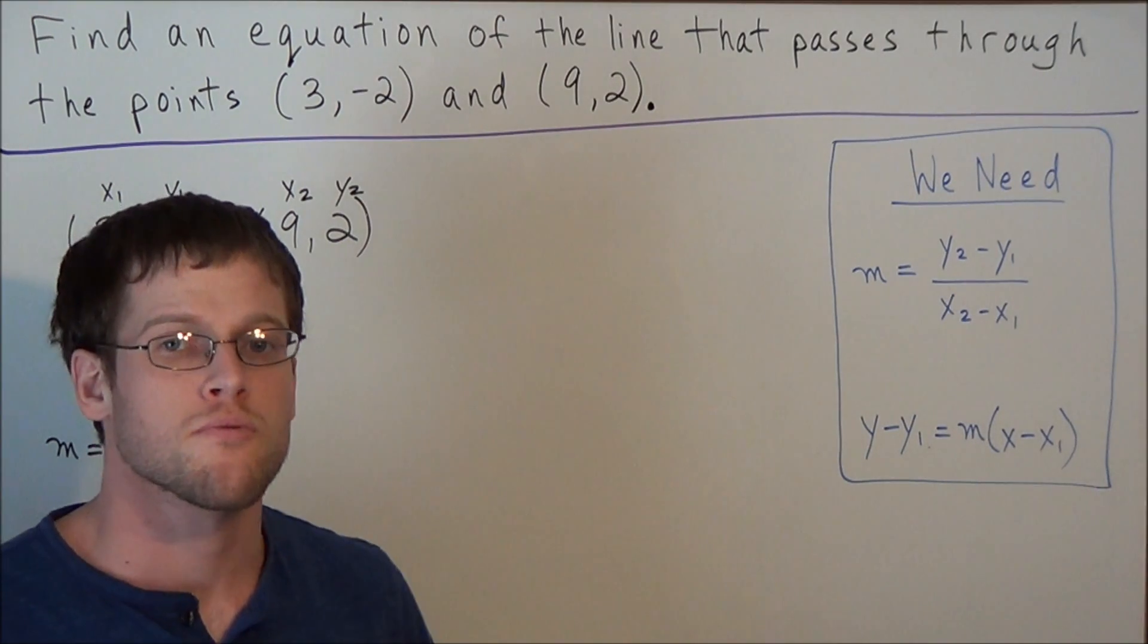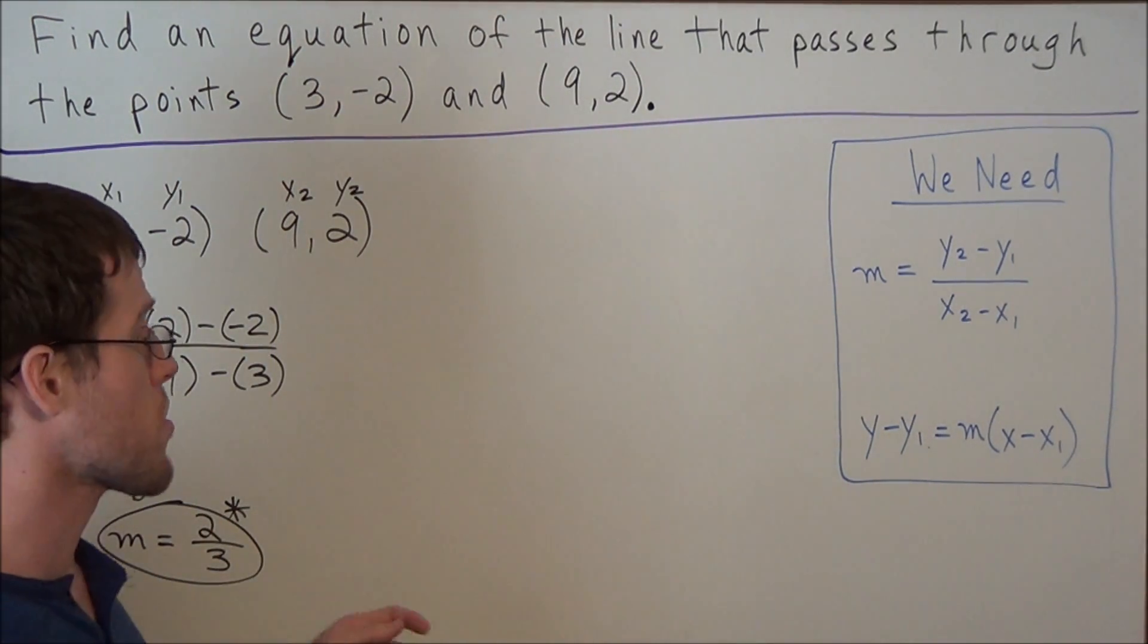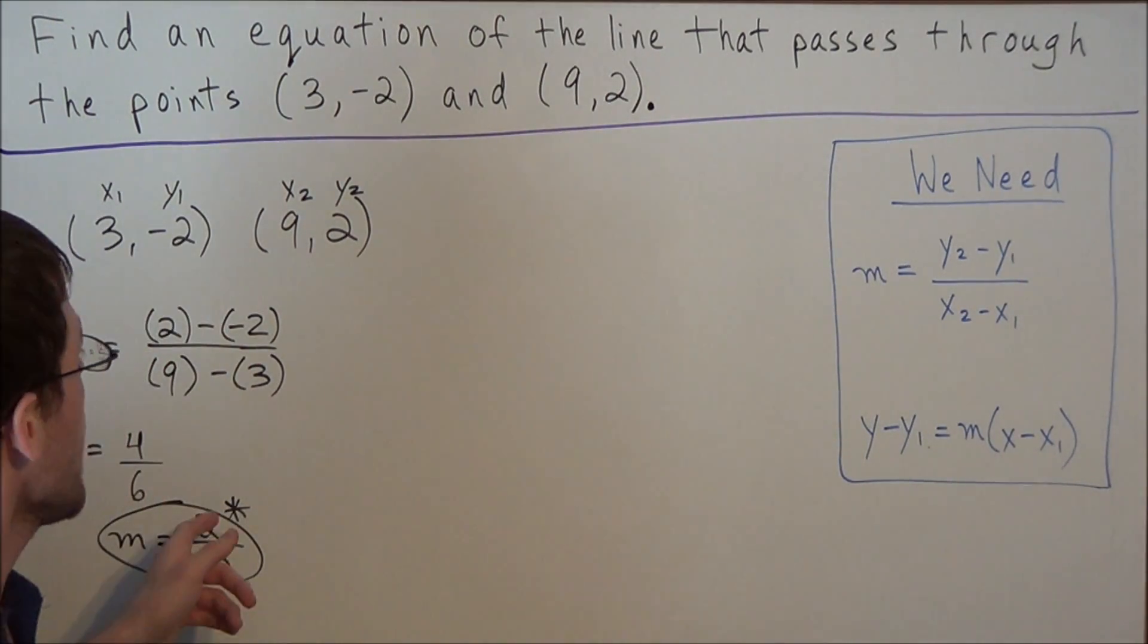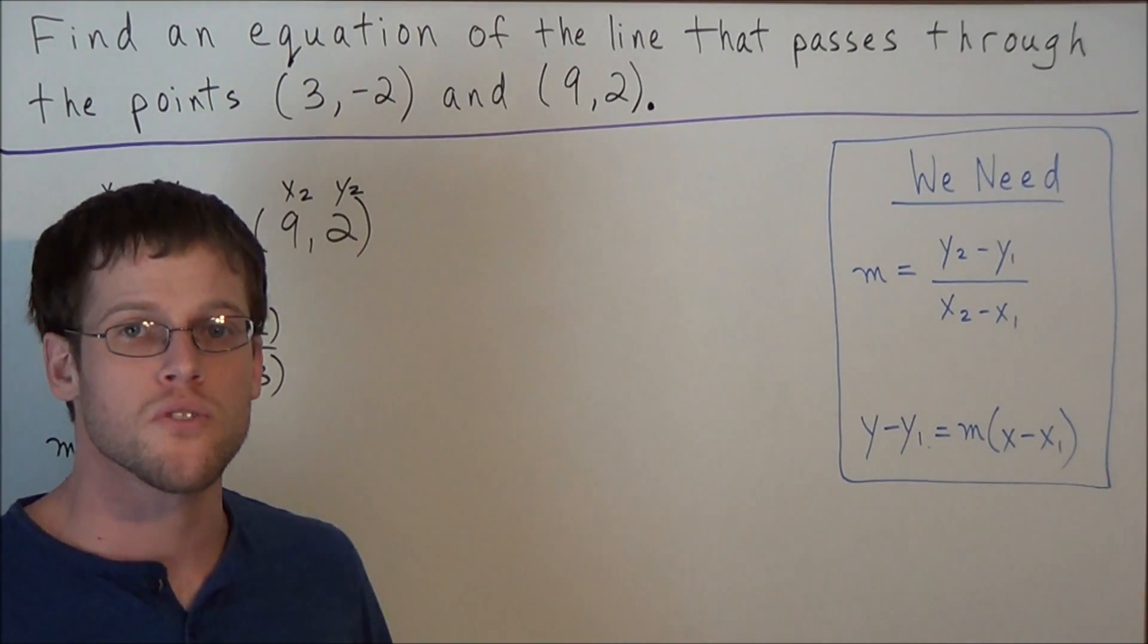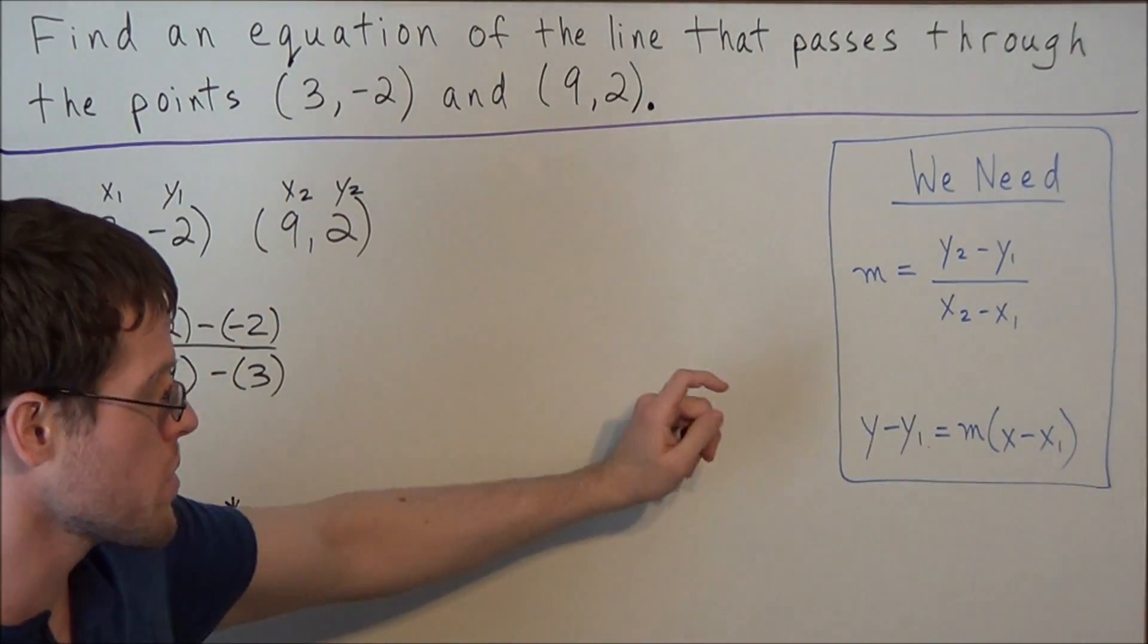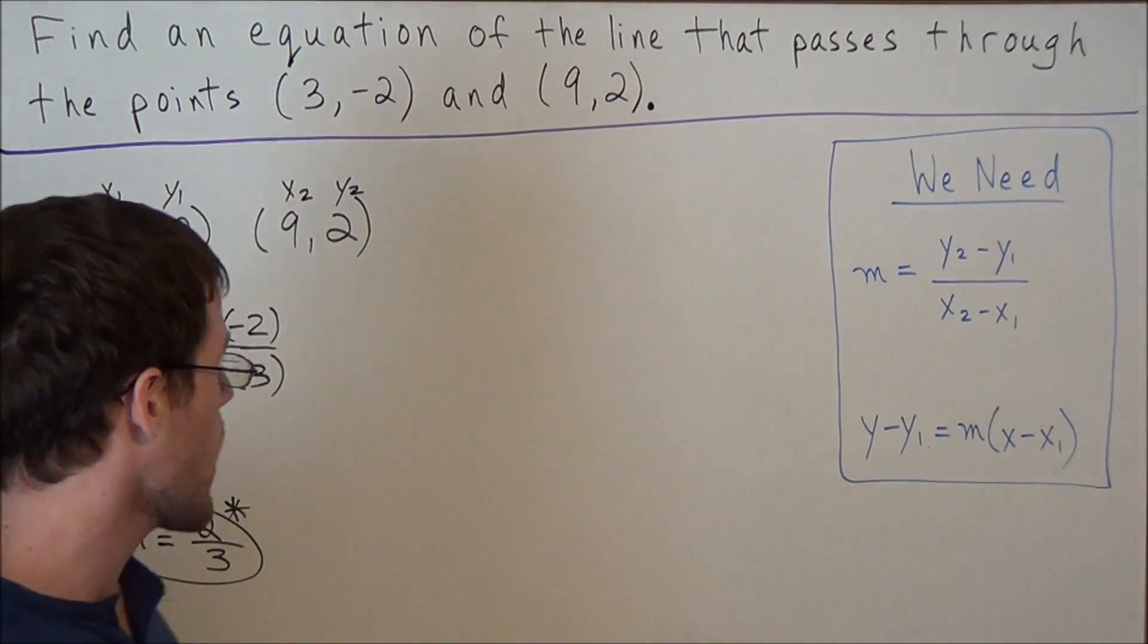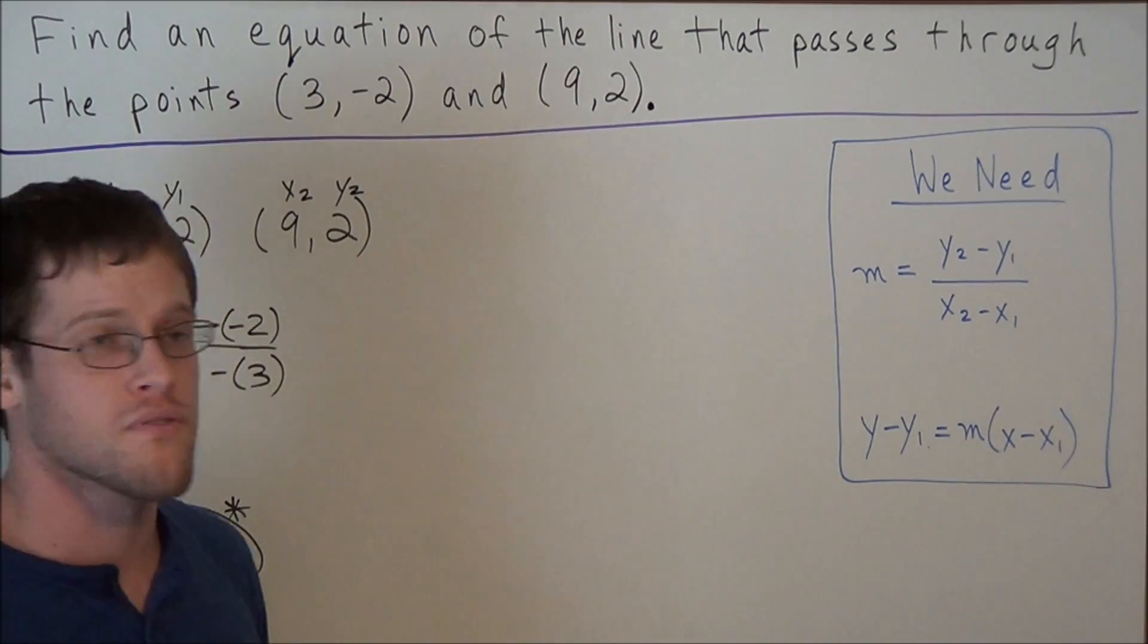So for the next step of this problem, we just found that we have a slope of positive 2 over 3. But to write an equation of a line, we need a point and a slope. So since we have two points to choose from, we could choose either one to plug into the point-slope-form equation. But since we already labeled it as x1, y1, we'll go ahead and use the point (3, -2) with the slope of 2 over 3.